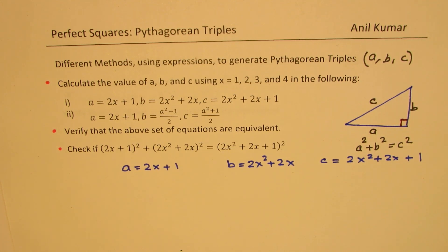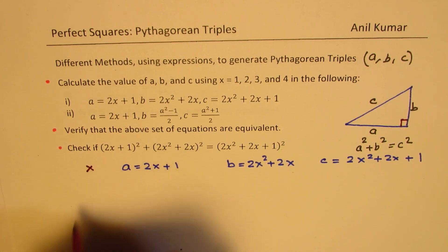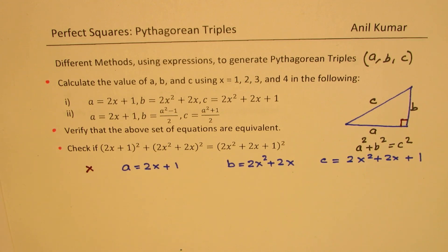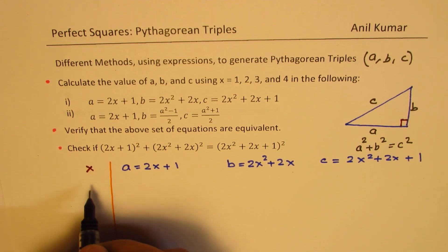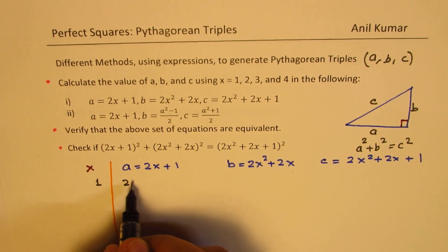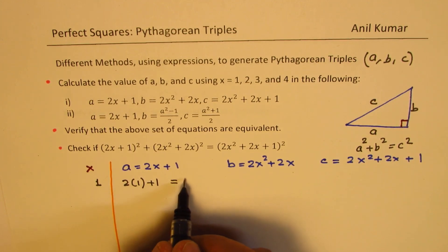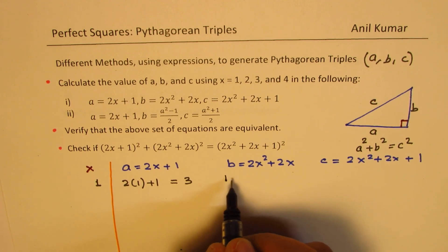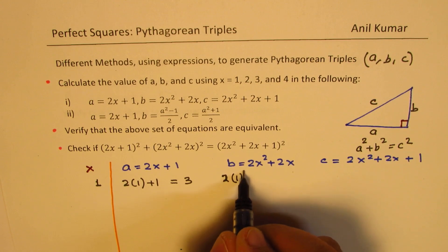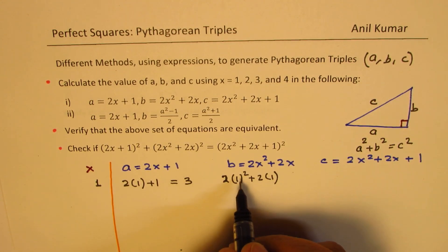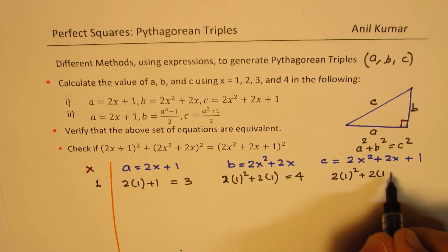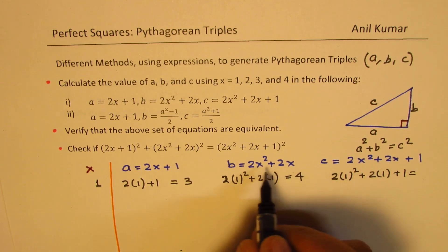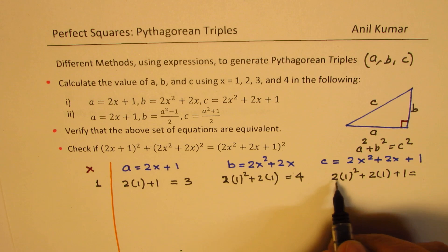We'll take some values of x to begin with, and make a column for x. So with values of x as 1, 2, 3, and 4, we find the sides a, b, c of the right triangle. If x = 1, substituting gives a = 2×1 + 1 = 3, b = 2×1² + 2×1 = 4, and c = 2×1² + 2×1 + 1 = 5.